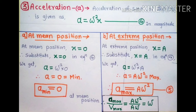At extreme position, displacement x = A, which is the maximum displacement. Substituting x = A in equation four: a = ω² × A = Aω². This is the maximum value of acceleration. Therefore a_max = Aω², equation number five.